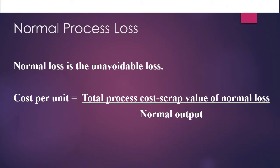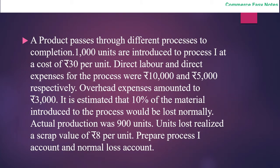The cost per unit is equal to total process cost minus the scrap value of normal loss, divided by normal output. In case there is no scrap value for the normal loss, the scrap value of normal loss will be zero, so the formula will simply be total process cost divided by normal output.